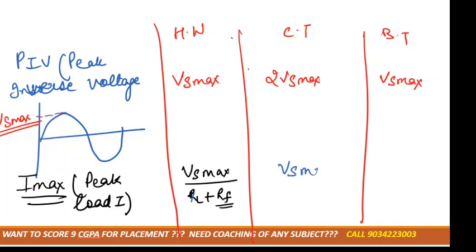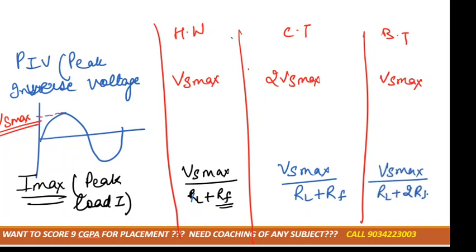For the center tap rectifier, Imax is VS max divided by RL plus RF. For bridge type rectifier, it is VS max divided by RL plus 2RF. The reason for 2RF is that in the bridge type, 4 diodes are used and at any single time 2 diodes are working. But in half wave and center tap, only one diode is working at a time, so only RF.